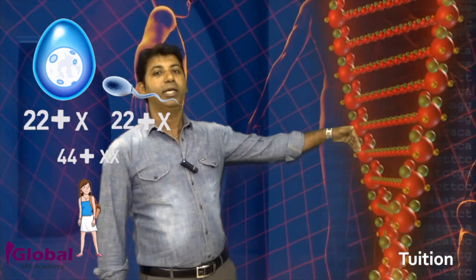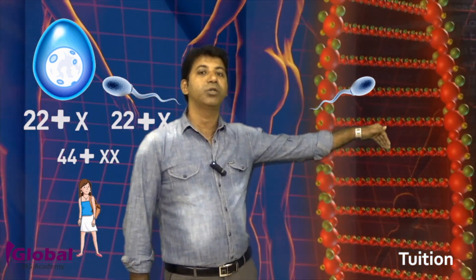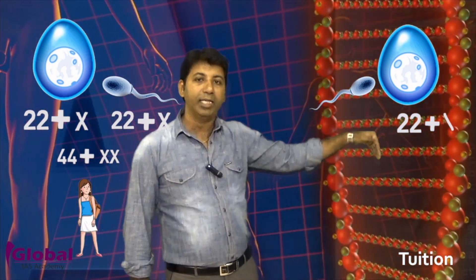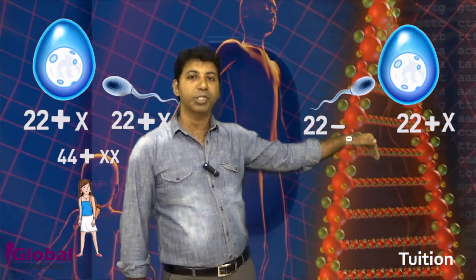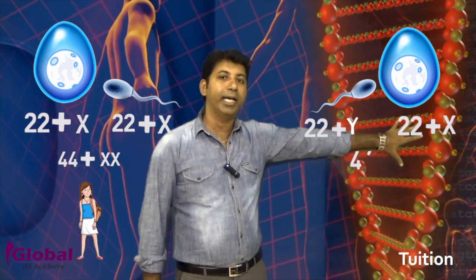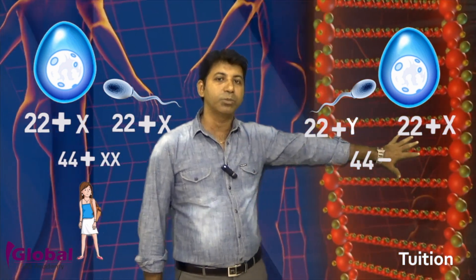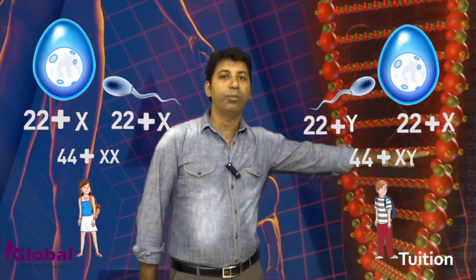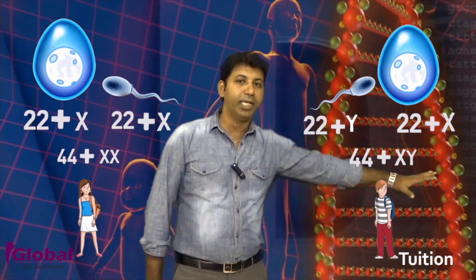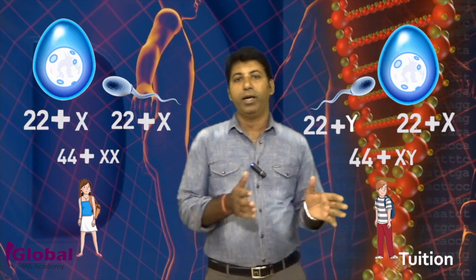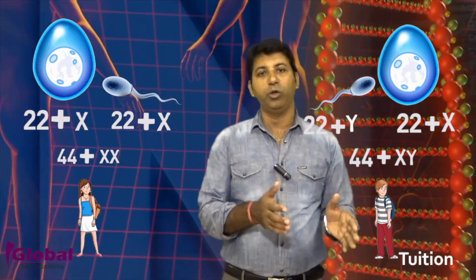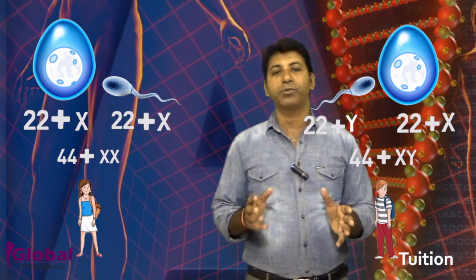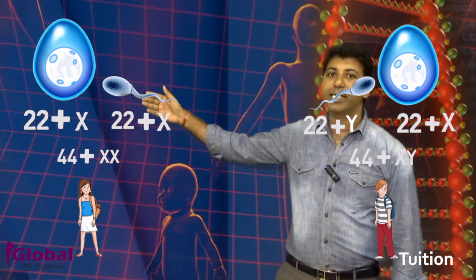If the other type of sperm, 22+Y, enters the birth canal and meets the egg cell (22+X), the overall chromosome pattern will be 44+XY, and the result will be a baby boy. So it is the type of sperm — either 22+X or 22+Y — that decides the sex of the baby.